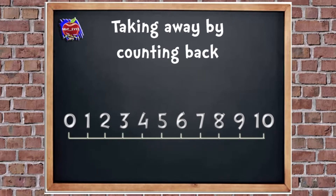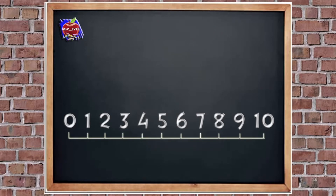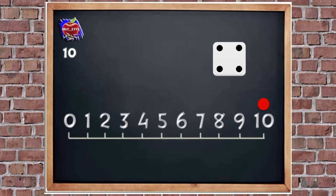So let's have a look now at taking away by counting back. I'm going to start on the number 10, so my counter's on 10. I'm going to put that in my number sentence. Then, just like we did when we were adding, we're going to roll the dice to create our whole number sentence — but remember, we're taking away today. How many? Yeah, four. So 10 take away four equals — we need to jump backwards, four jumps back. One, two, three, four. What did we land on? Six. So our number sentence reads: 10 take away four equals six.